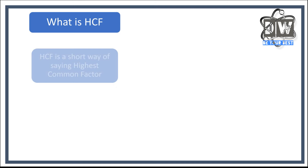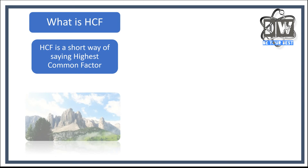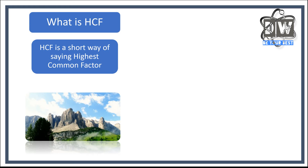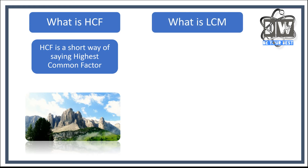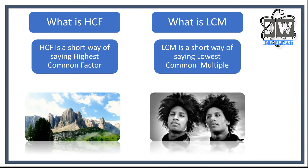Let's just go over what a highest common factor is. HCF is a short way of saying highest common factor. We're looking at two numbers and looking at the factors of those numbers. The highest common factor — and what's the lowest common multiple? Well, LCM is a short way of saying lowest common multiple, so we're writing the multiples of numbers and picking the lowest one.